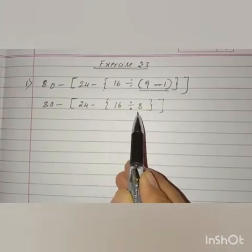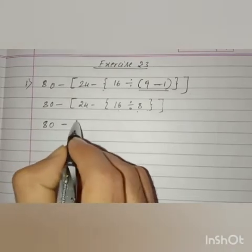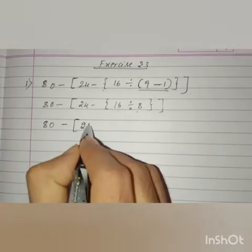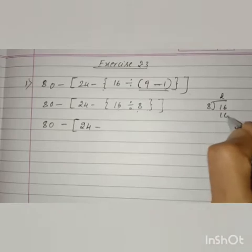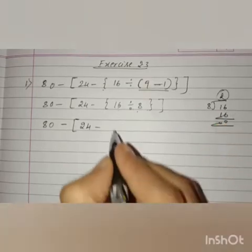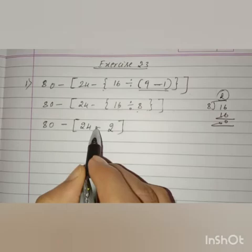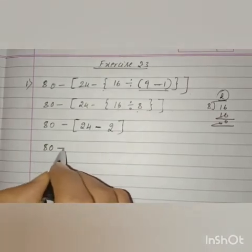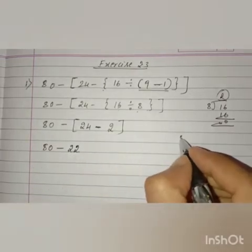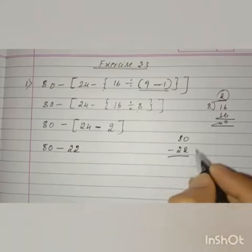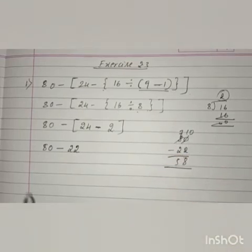After removing the common bracket we have to remove the curly bracket. Here they have given division, so remaining as it is: 80 minus big bracket open 24 minus, so 16 divided by 8 equals 2. Now we have to remove the big bracket — do subtraction. 24 minus 2 is 22. Now 80 minus 22: 80 minus 22 is 58. We got the answer.